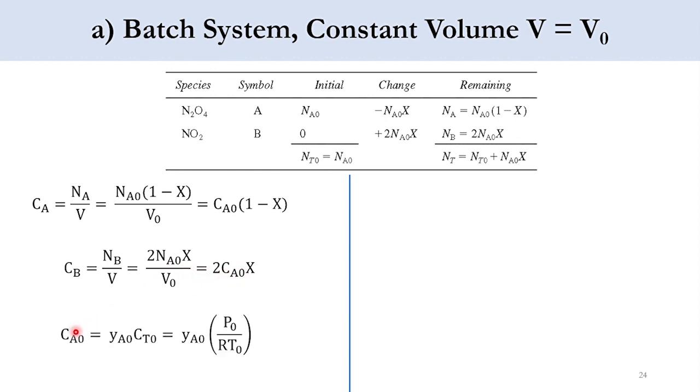For C_A0, we know the relation that it is equal to Y_A0 into C_T0, and C_T0 is equal to P_0 over RT_0. Now Y_A0 is obviously 1 in the system because only A is present. P_0 is 2 atm, the value of R is 0.082, and T_0 is 340 K. So the answer will be 0.07174 mole per cubic decimeter.